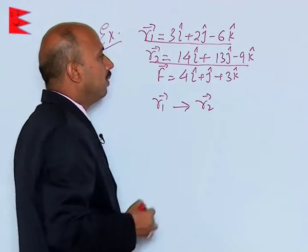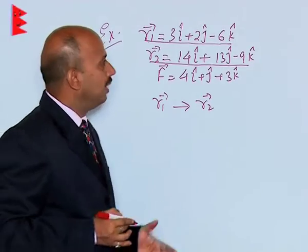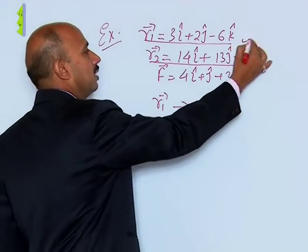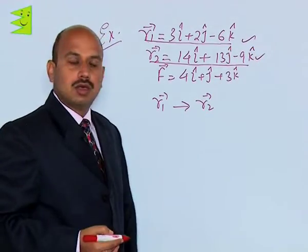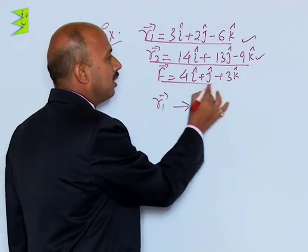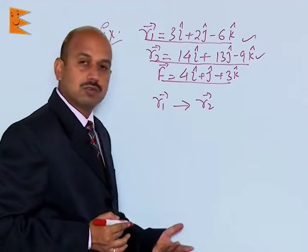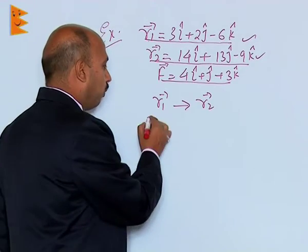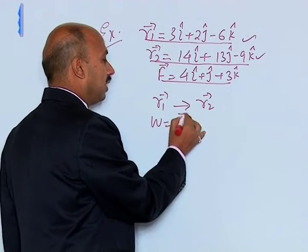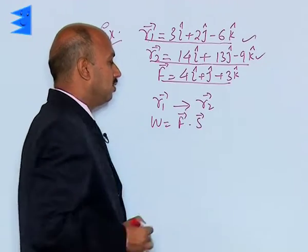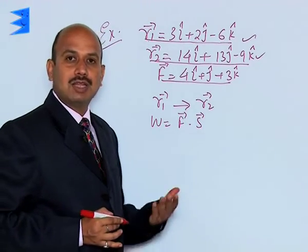So, particle is moving from position R1 to R2, and their position vectors are given by these two equations, and the force acting on the particle is given by this. So we have to calculate work done by the force. You know work done is equal to vector F dot S, that is the dot product of the force and displacement.